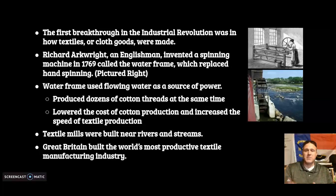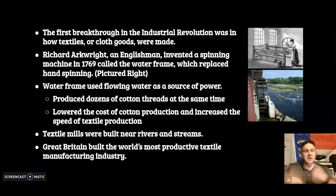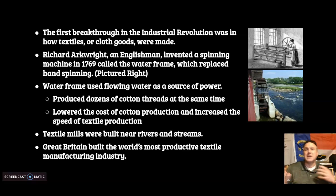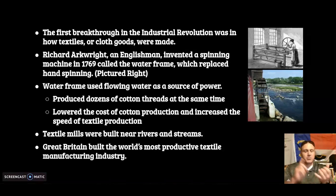This water frame used flowing water — rivers and streams were the main form of power at the beginning of the Industrial Revolution. The water source would turn the gears, and the machine would spin, now making dozens of cotton threads at the same time rather than one. This is all about mechanization: machines producing things faster, cheaper, and more efficient.